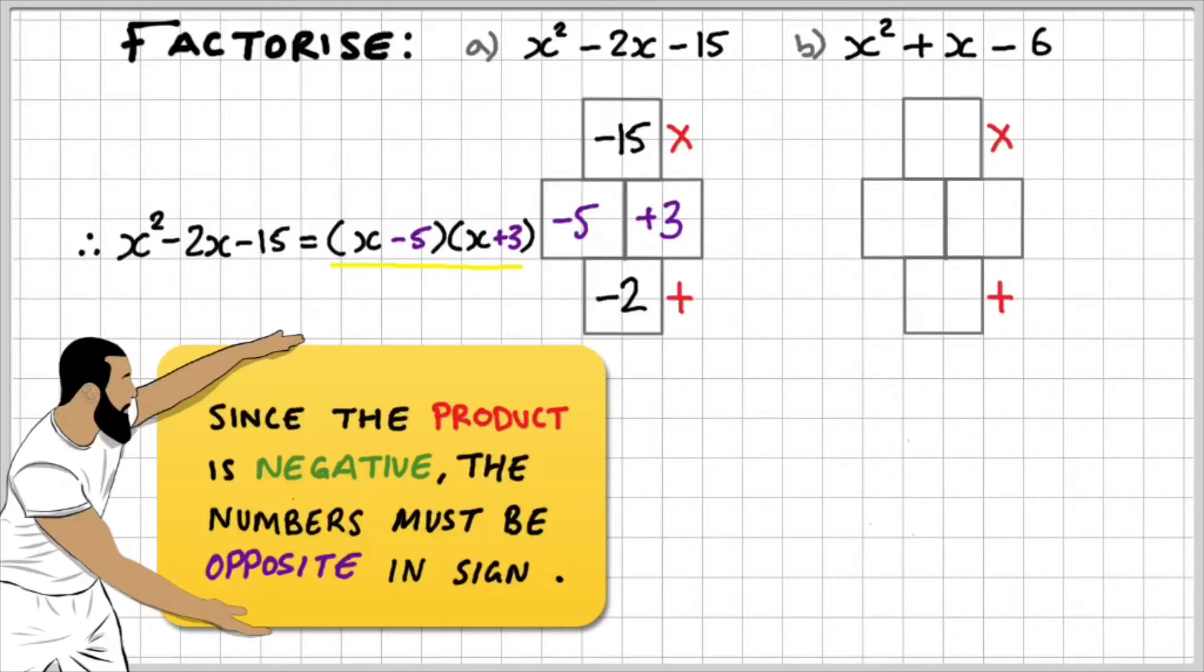Let's look at part b. Since we have only 1x, the coefficient of x is 1. In this case, I have negative 2 and positive 3. Therefore, x squared plus x minus 6 is equal to x minus 2, x plus 3.